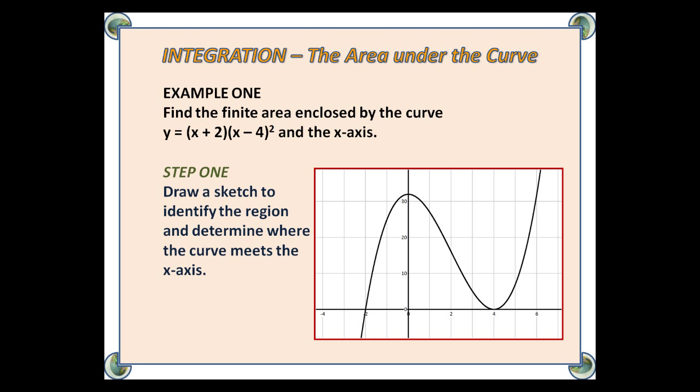Step 1: Draw a sketch to identify the region and to determine where the curve meets the x-axis. In this particular question we can already see that it will cross at -2 and touch at 4, because it's already factorised.